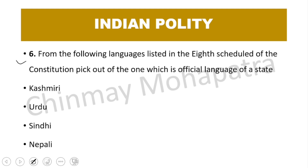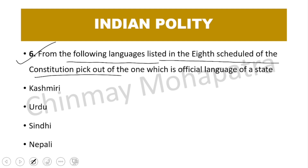Question number 6: From the following languages listed in the 8th Schedule of the constitution, pick out the one which is the official language of a state. The right answer is Urdu.